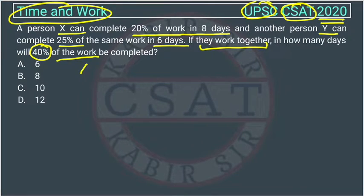So what is given? This is person X. He completes 20% of the work in how many days? 8 days. So you can use the unitary method here.